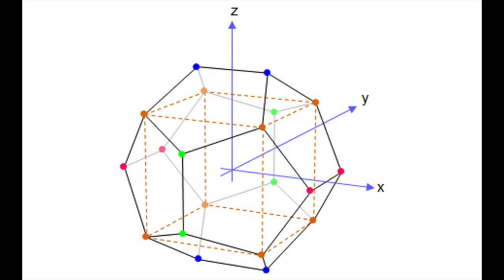The dodecahedron, which according to Plato is the solid which the god used for embroidering the constellations on the whole heaven, is intimately related to the golden ratio. Both the surface area and the volume of a dodecahedron of unit edge length are simple functions of the golden ratio.